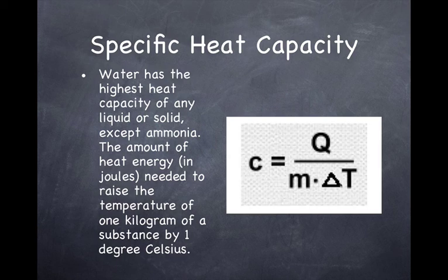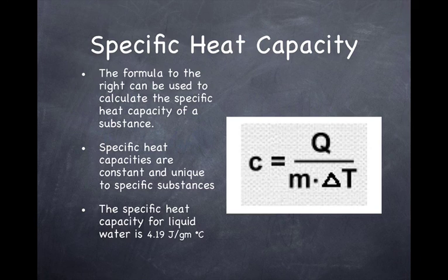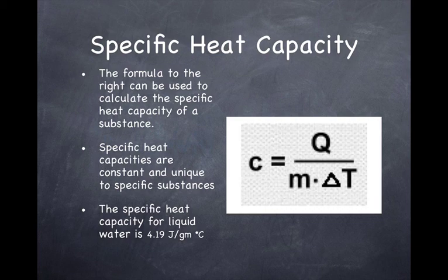So if the temperature changed from 5 to 10 degrees, the change in temperature would be 5 degrees. The formula can be used to calculate specific heat capacity of a substance. The specific heat capacities are constant — they don't change — and they're unique for specific substances. The specific heat capacity for liquid water is 4.19 joules per gram degree Celsius.